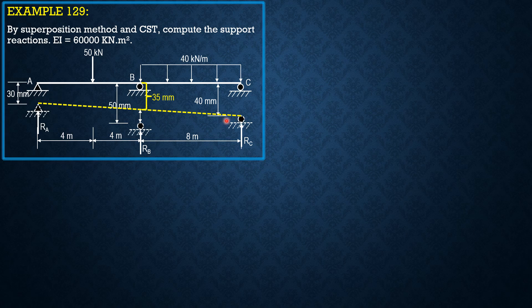This is the normal beam and it deflects downward further by 15 mm. Since the deflection is downward and the reaction force is upward, these are opposing. Remember, work is positive if force and displacement are in the same direction. Therefore we treat the 15 mm as negative because it is opposite to the assumed direction of RB.